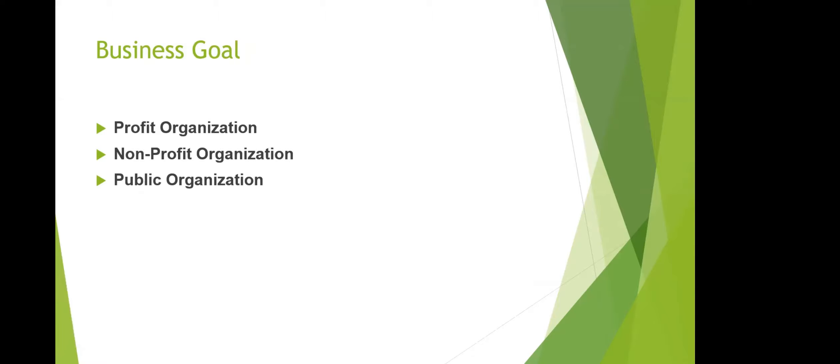Based on the business goal, you have different types of organizations. A profit organization is one you create to make profit — for example, a mechanic workshop, a private school providing learning and teaching for students, or a company that sells products to customers.